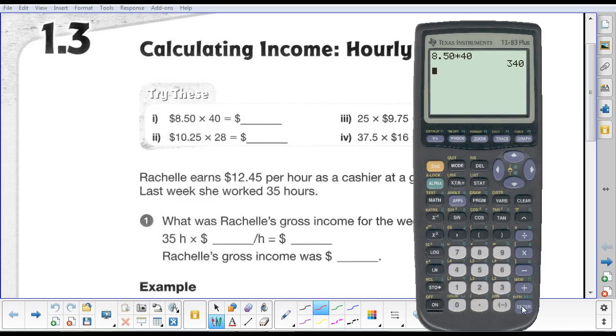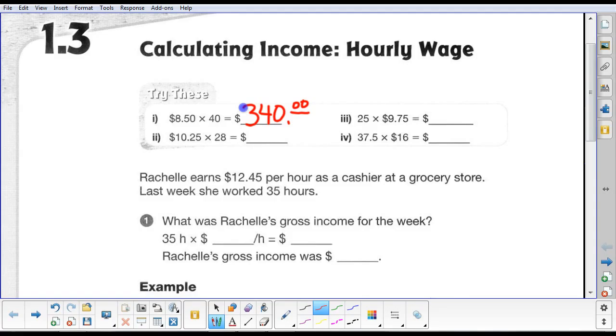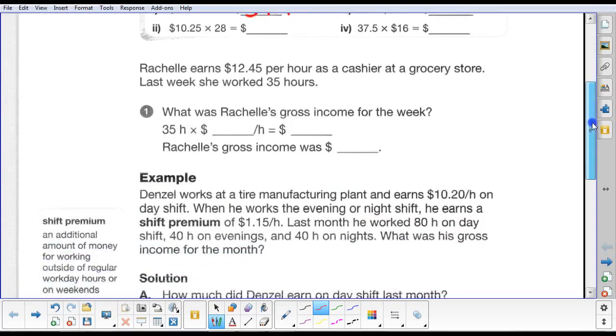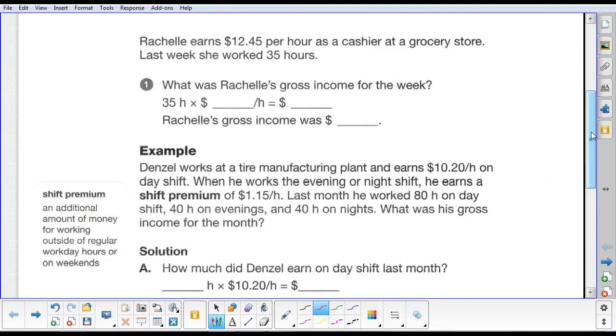You can do the other three, very simple, just use your calculator. All right, let's go right to an example of somebody earning an hourly wage and working so many hours per week. Rachel earns $12.45 per hour as a cashier at a grocery store. Last week, she worked 35 hours. What was Rachel's gross income for the week?